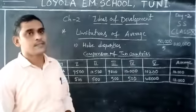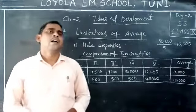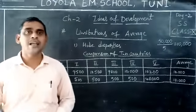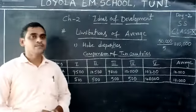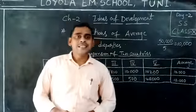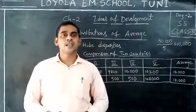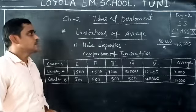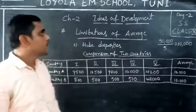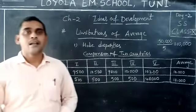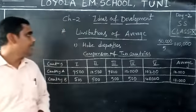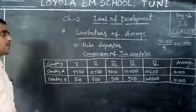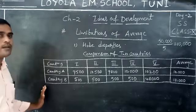Now let us discuss the limitations of average income. Previously, we said that to compare countries, per capita income or average income is used. But is it giving correct information? That is the question. The first limitation is high disparities. Let us take an example with two countries — Country A and Country B.